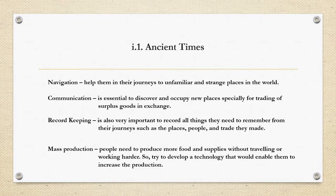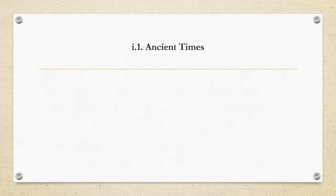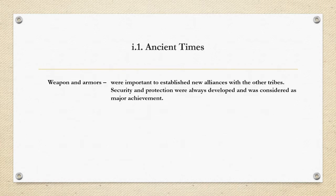For mass production, people needed to produce more food and supplies without constant traveling. They worked harder and tried to develop technologies that could increase production more easily. Weapons and armies were also very important to establish new alliances with other tribes, which served as their source of security.